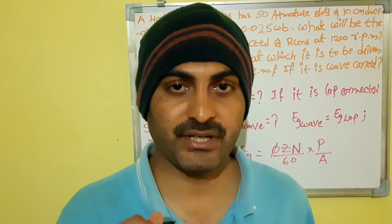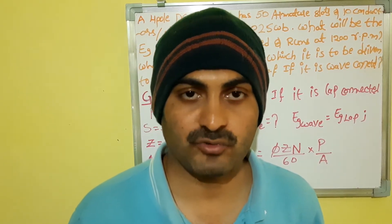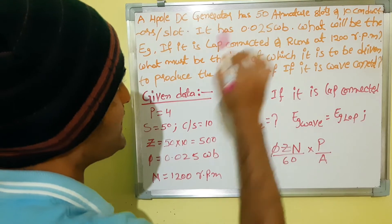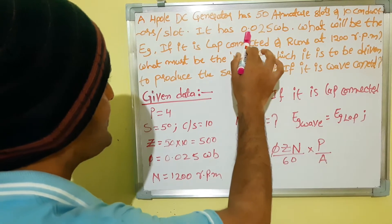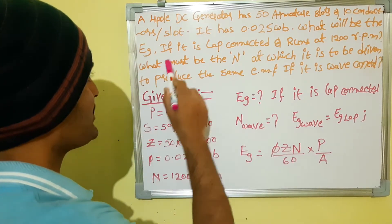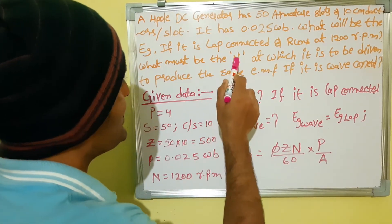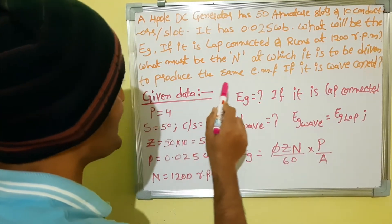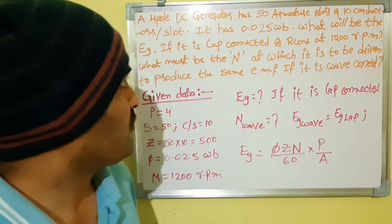Hi engineers, welcome to Electrical Engineering Telugu family. Today in the DC machine series, we have a problem on the EMF equation. A four-pole DC generator has 50 armature slots and 10 conductors per slot. It has flux per pole of 0.025 Webers. What will be the generated EMF if it is lap connected and runs at 1200 RPM?